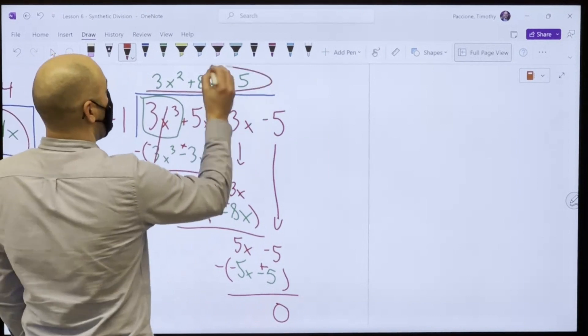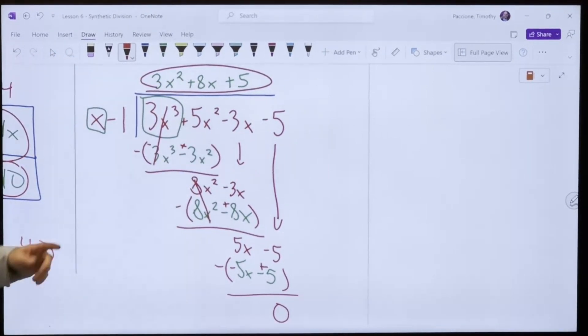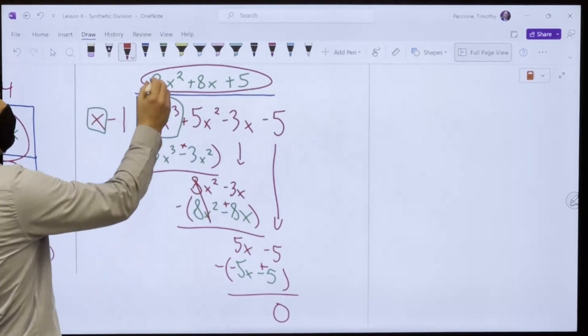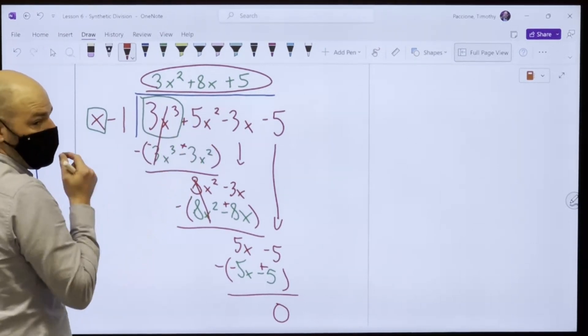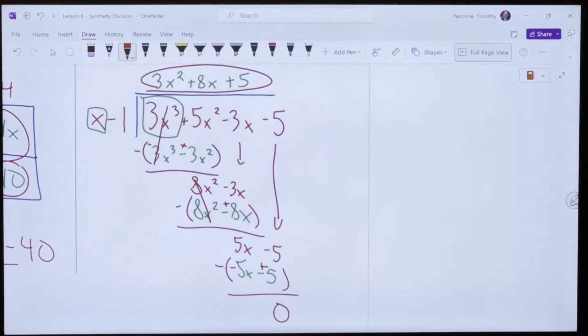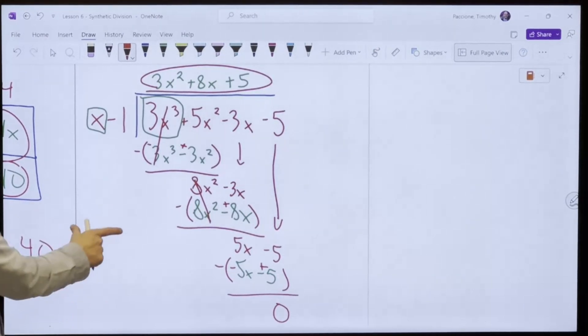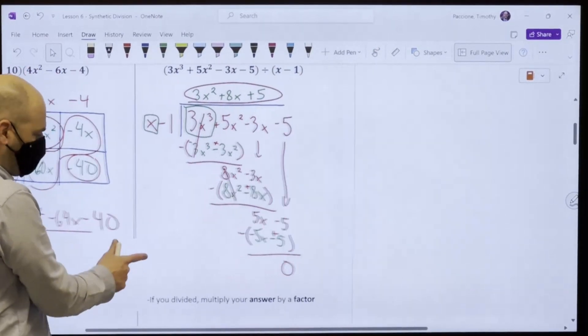5 times x minus 1 is 5x minus 5, which is good news. Because now, when I subtract and I flip those signs, I get a zero. So this is my answer and I have no remainder. That's a factor. I can check my work by multiplying that by that and I should get that. Okay? Long division. That's how it goes. Okay. Got to move on though. We only have 8 minutes.